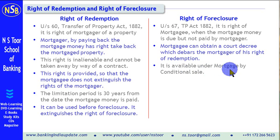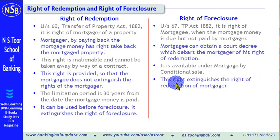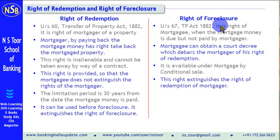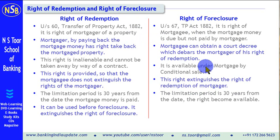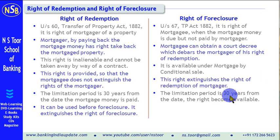The Right of Foreclosure is available under Mortgage by Conditional Sale. There are 6 types of mortgages, and out of those, this right is available only under Mortgage by Conditional Sale. Once this right is used by the mortgagee, it extinguishes the right of redemption of the mortgagor. The limitation period here is also 30 years from the date the right becomes available. Once the money becomes due and is not paid by the mortgagor, this right can be used within 30 years by the mortgagee.